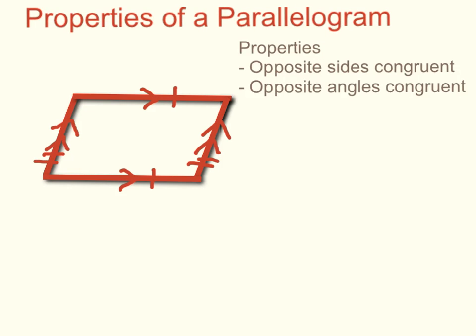The next property is that opposite angles are congruent. So this angle is equal to this one, and this one is equal to this one.